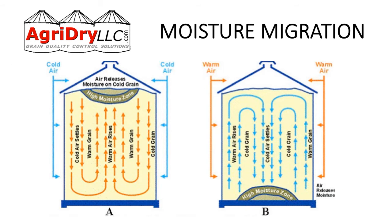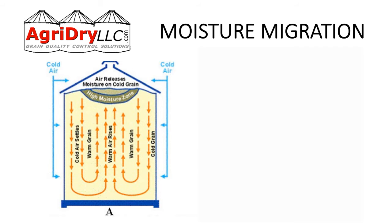The other issue that comes into play is moisture migration. The first thing to remember is that warm air rises and cool air sinks. In a fall scenario, you came out of the field with warm grain and it's colder outside. Cold air sinks and forces the warmer air in the grain upward. Every grain has its own moisture-holding capacity — the warmer it is, the more moisture it holds; the colder it gets, the more moisture it loses. As that warm air gets forced up and reaches the top, it cools off, loses its moisture-holding capacity, and dumps all the water right at the top — that's where you're going to have your quality issue.